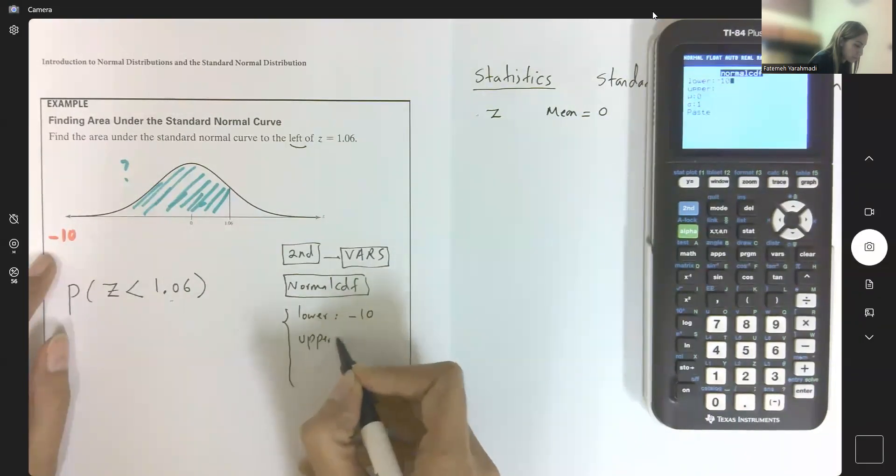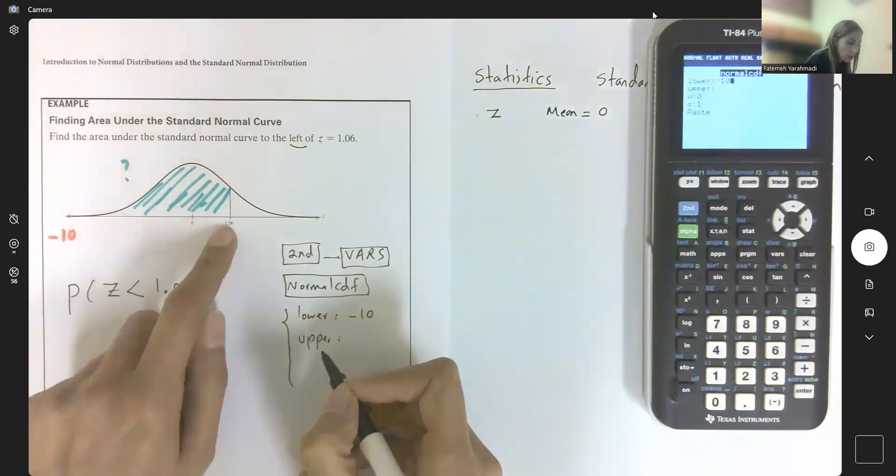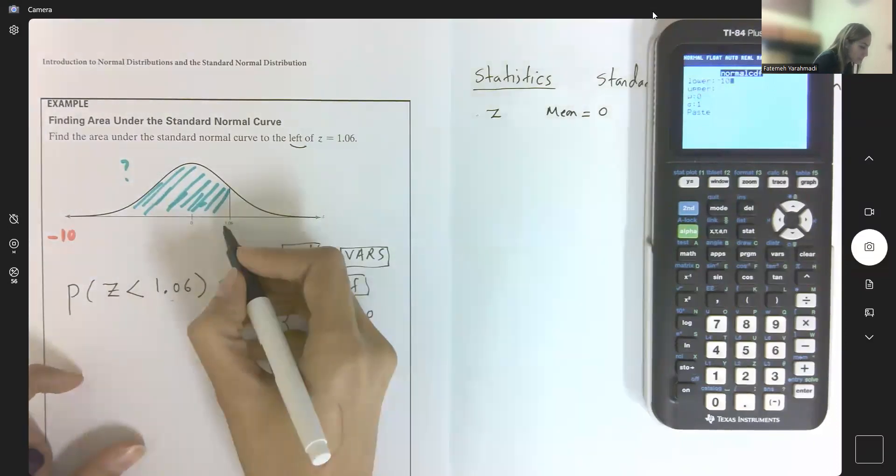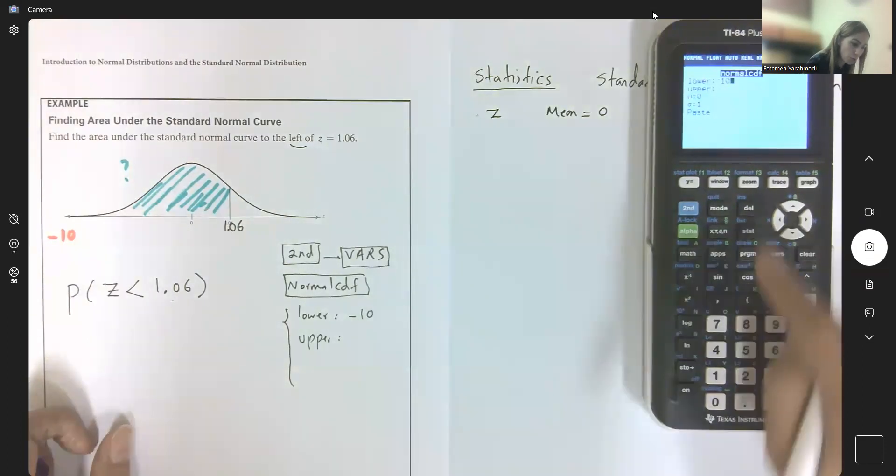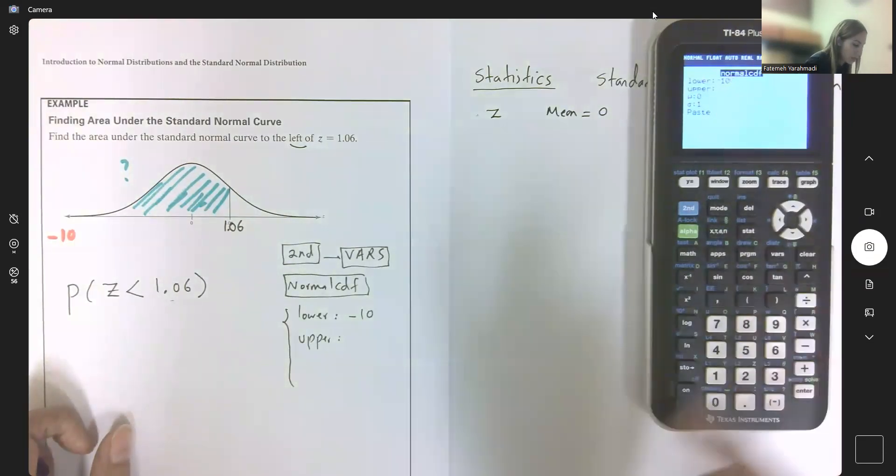What is my upper bound? The value stops at 1.06. 1.06 is going to be your upper bound. This is my z-score, the z-value given to me, 1.06.